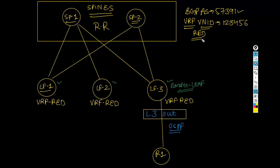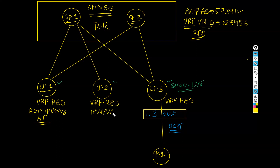Now let's talk about MPBGP and how it works. The BGP IPv4 address family is deployed on all the leaf switches — both the border leaf and the non-border leaf. When we are creating the L3 out, by default the BGP IPv4 or IPv6 address family will be automatically deployed by the fabric into the user VRF on all leaf switches, including border and non-border leaves.